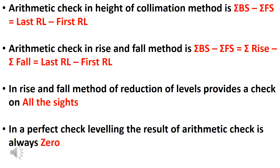The arithmetic check in the rise and fall method is: Sigma BS minus Sigma FS equals Sigma rise minus Sigma fall, which equals last RL minus first RL.